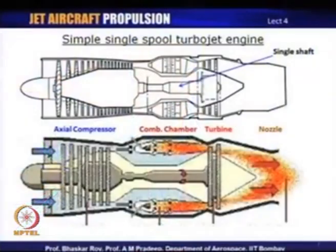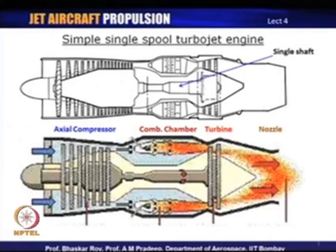If we look at the basic jet engine, we shall see that it has components which to begin with are compressors. In this particular diagram, you would see a component of compressor which is generally called axial compressor. We will see in the next picture a diagram of a centrifugal compressor followed by axial compressor. There is a combustion chamber, then there is a turbine, and then the flow exits through the nozzle.